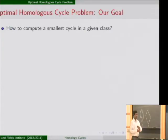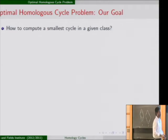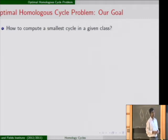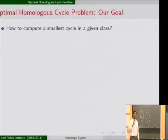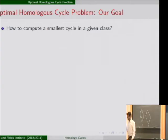Now I come to the last part: the homologous cycle problem. The input is the triangulation and a cycle in any class; I am trying to localize it. For Z₂ coefficients this is NP-hard even for H₁, so no polynomial-time algorithm exists unless P = NP. Surprisingly, switching to Z coefficients — which one might expect to be harder — actually makes it easier for computation.